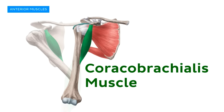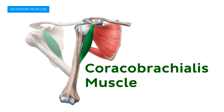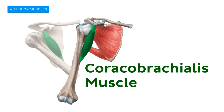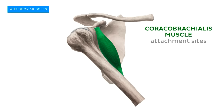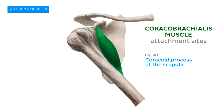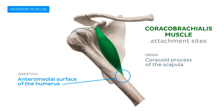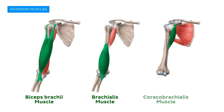The third muscle of the anterior compartment is the small coracobrachialis muscle. As its name suggests, the coracobrachialis has its proximal attachment point or origin at the coracoid process of the scapula. From there it extends distally along the humeral shaft to insert along the anteromedial surface of the humerus. And with that, we have discussed all three anterior muscles of the arm.